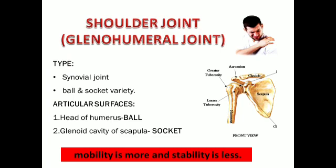Now let us look at the shoulder joint, also called the glenohumeral joint. This name comes from its articular surfaces: proximally we have the glenoid cavity of the scapula, and distally we have the head of the humerus. These two structures form a ball-and-socket joint — the ball is the head of the humerus and the socket is the glenoid cavity of the scapula.